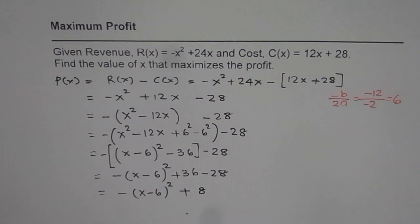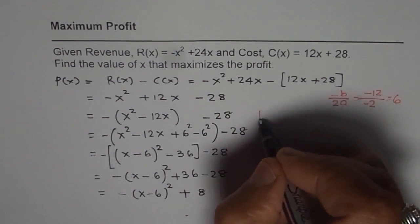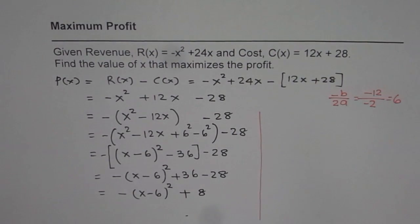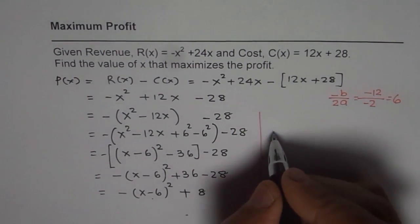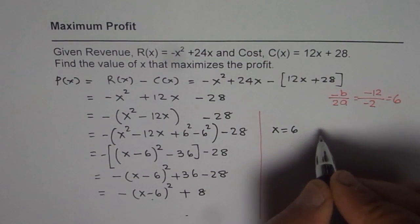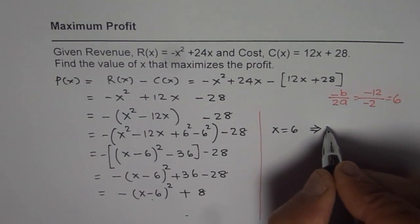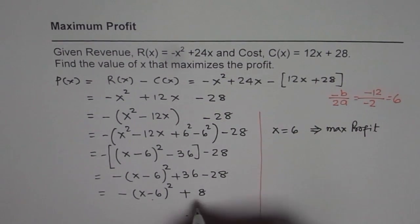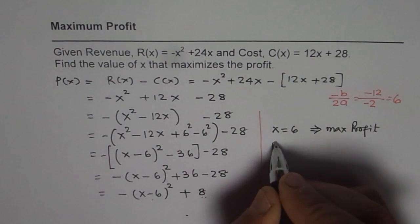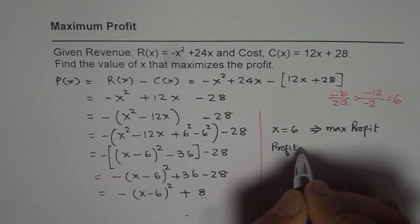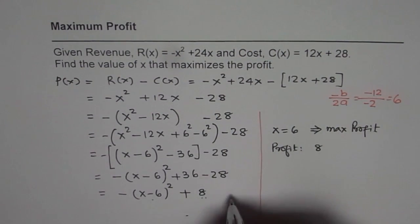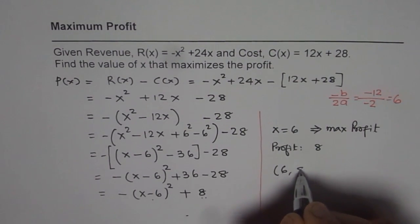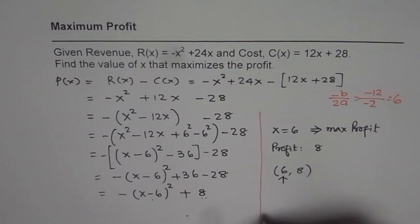And so we have -(x - 6)² and 36 - 28 is plus 8. So the maximum profit will be at x equals to 6. So maximum profit is when x equals 6, and the profit will be 8. From here you can find the vertex which is (6, 8) and that is the answer we are looking for.